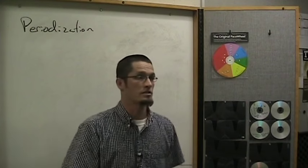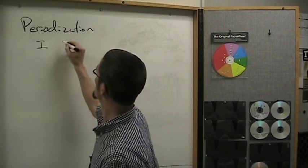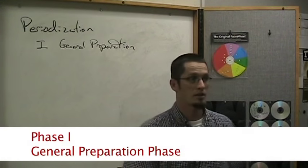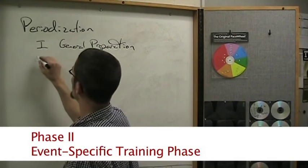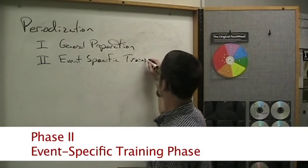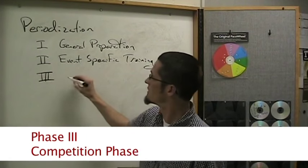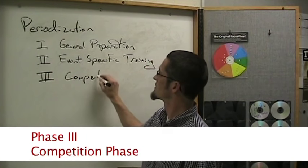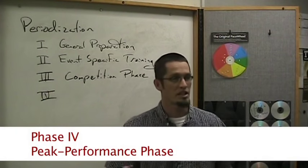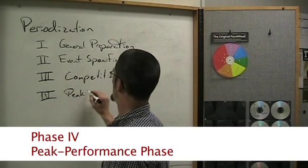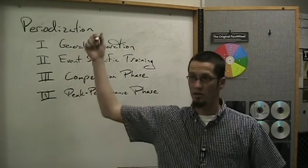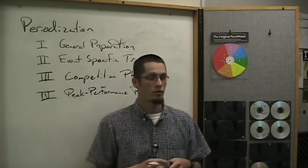Phase number one is general preparation. Phase number two is event-specific training. Phase number three is the competition phase. And phase four is the peak performance phase. We start with the idea that there are four phases of periodization. You've got to figure out how long you've got until your most important race. If you're coaching high school or collegiate level, the most important races are probably those qualifiers at the end of the season — the regional championship or state track meet.